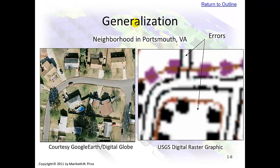We have generalization here. These are maps of the same area. This is a Google Earth digital globe image and this is a USGS digital raster graphic, and what this is pointing out is some errors on the USGS digital raster graphic. It's old. There's a missing garage or house here, and this appears as a road on the USGS map.